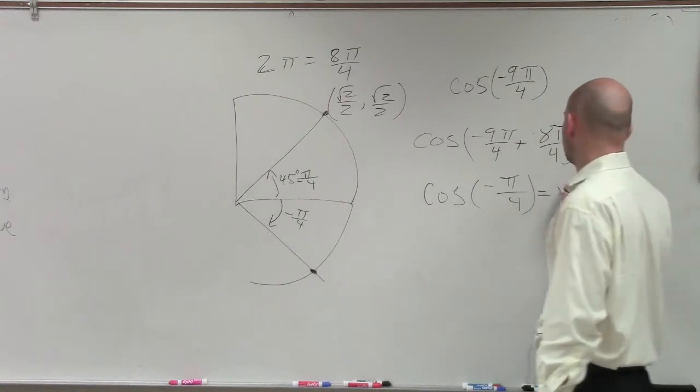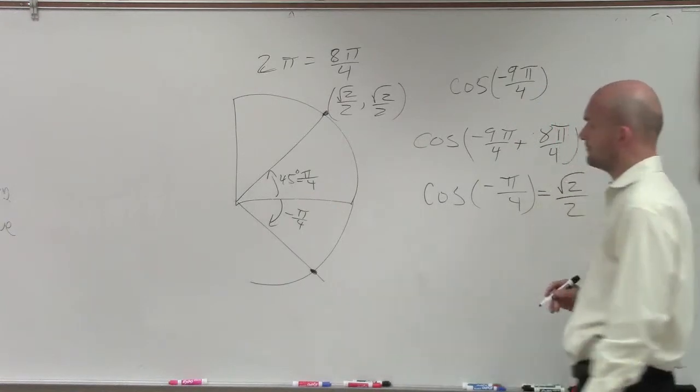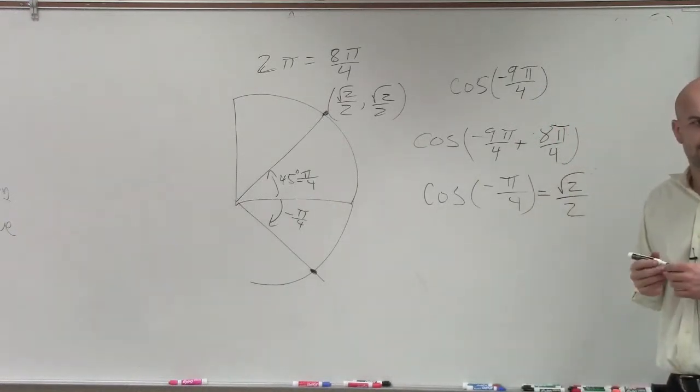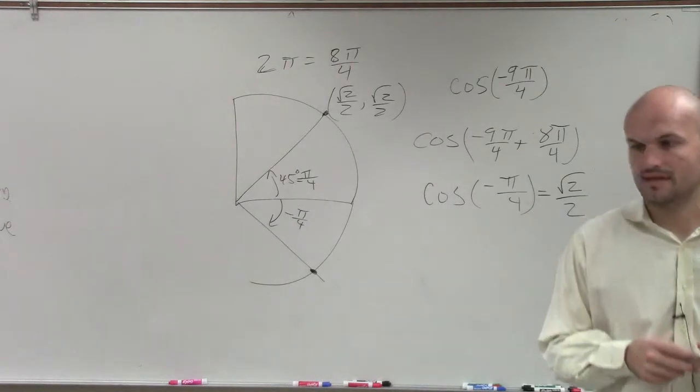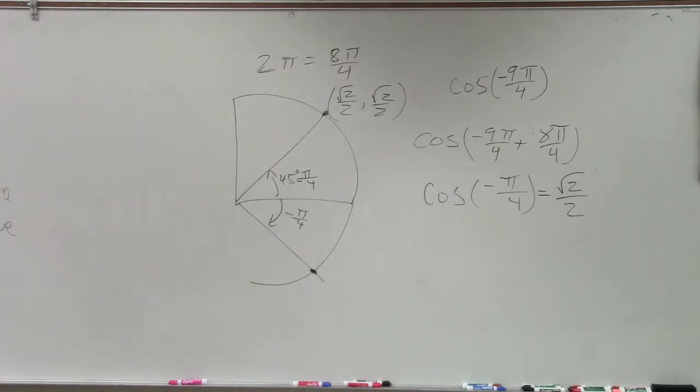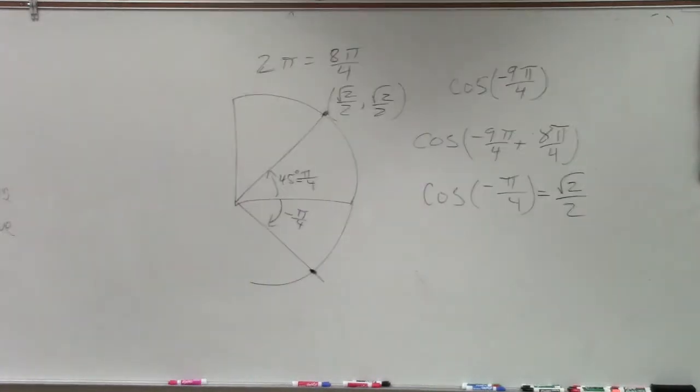So therefore, just that cosine is the x-coordinate. So it's just going to be square root of 2 over 2. OK? That's it. Done.